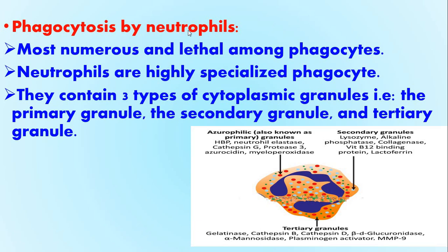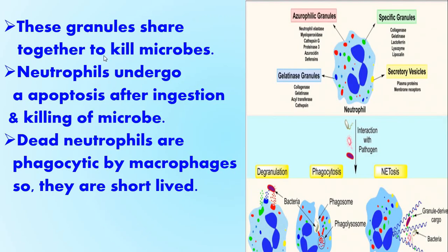Phagocytosis by neutrophils. Neutrophils are the most numerous and lethal among phagocytes. They are highly specialized phagocytes containing three types of cytoplasmic granules: the primary granule, secondary granule, and tertiary granule. Each contains enzymes and antimicrobial compounds. These granules work together to kill microbes. Neutrophils undergo apoptosis after ingestion and killing of microbes. As shown in the figure, neutrophils interact with pathogens, then form a phagosome and phagolysosome inside it, then bacterial release occurs. Dead neutrophils are phagocytosed by macrophages, so they are short-lived.